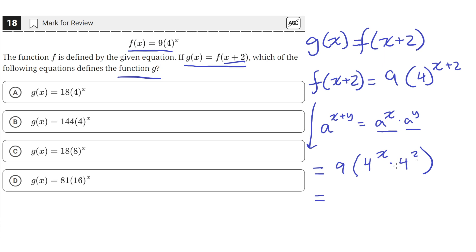Then we can just simplify this 4 squared. So it'll be 9 times 4 squared, which is 16, times 4 raised to the x.